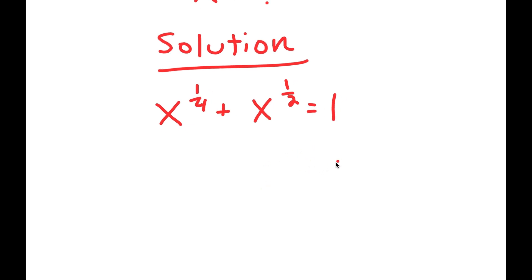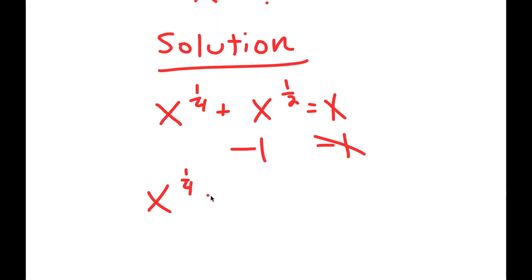I'm going to subtract 1 on both sides, so these two cancel out, and I get x to the power of one-fourth plus x to the power of one-half minus 1 is equal to 0.